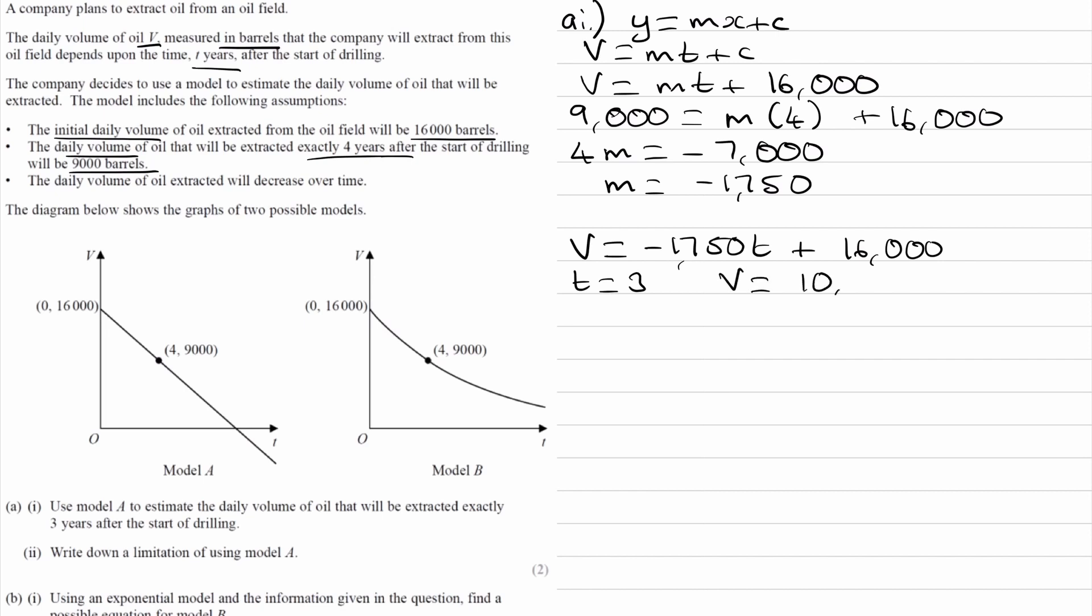For part two, write down a limitation of using Model A. The hint would be to think about what is unrealistic about Model A. What's unrealistic is that the volume of barrels extracted becomes negative after a certain amount of time, which wouldn't make sense. It doesn't make sense for the amount of oil you extract to be negative.